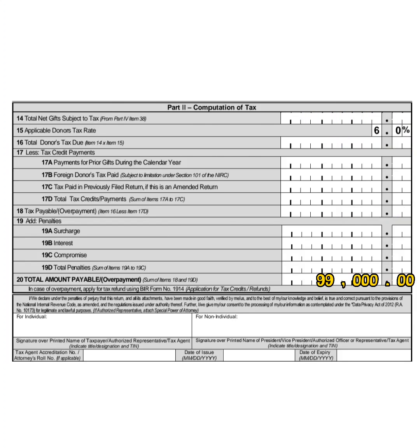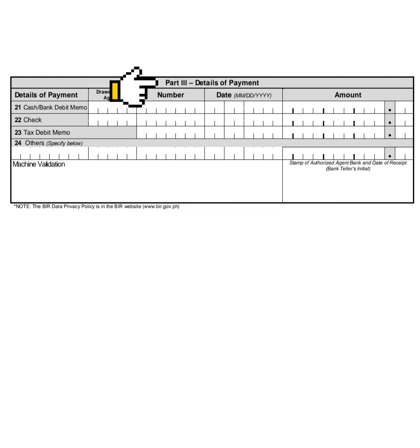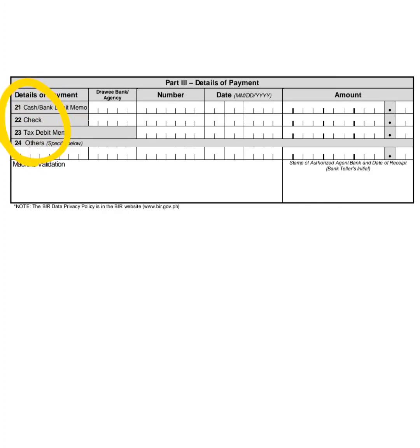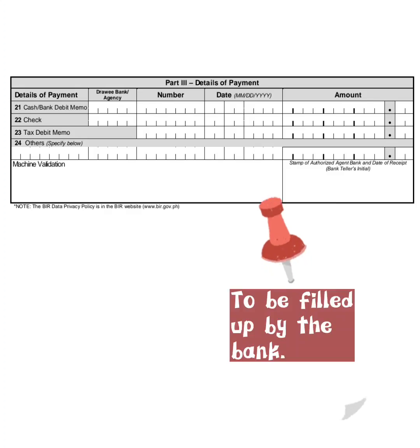Part 3: Details of Payment. This section refers to Item Numbers 21 to 24, which will be filled up by the bank.